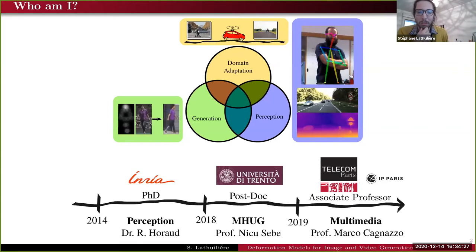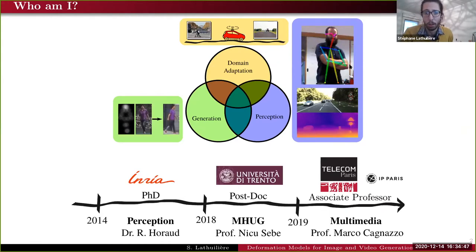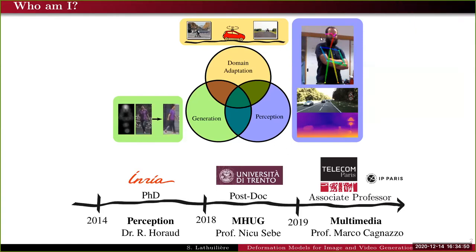Before going to the details of my presentation, I would like to give a kind of overall view of my research. I work in computer vision with three main topics. The first one is perception — standard perception tasks like depth estimation or estimating the pose of a person in an image.